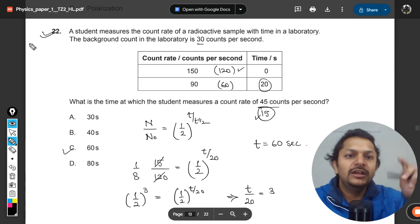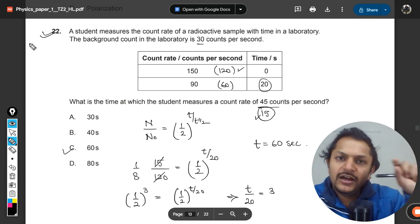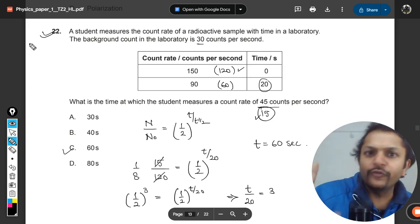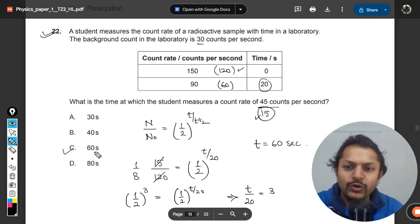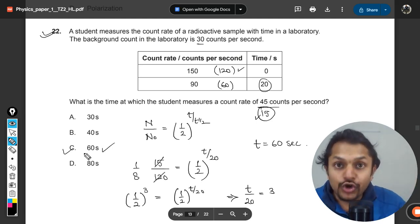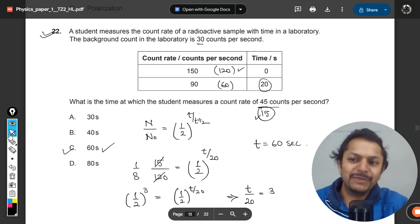If you have problems with this, search those questions on the YouTube channel by writing count rate and my name, Professor Varun. This is how we do this question, and the answer is C, 60 seconds. Thanks for watching. Please share the video with your friends and join the YouTube channel. All the best.